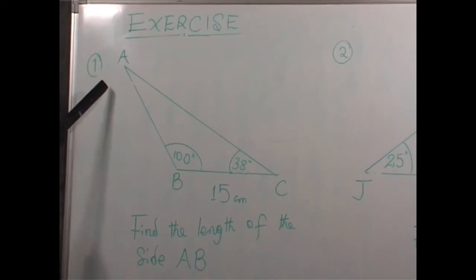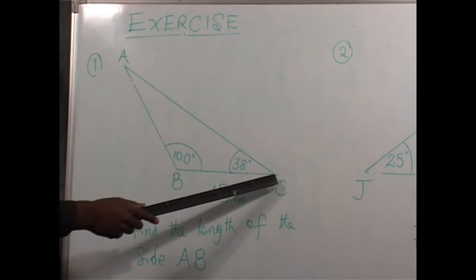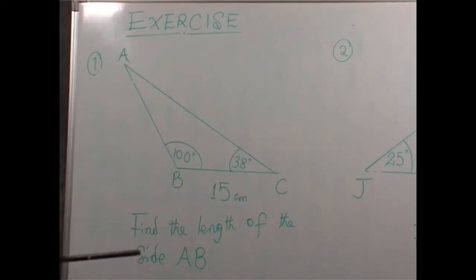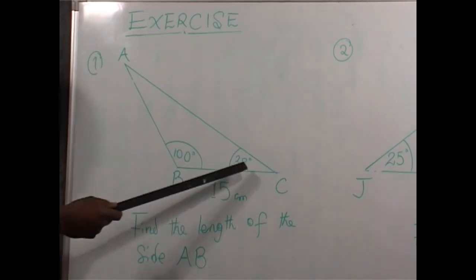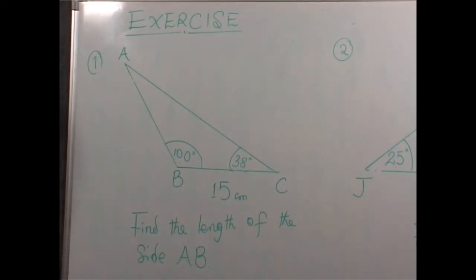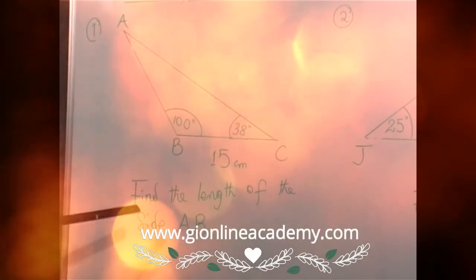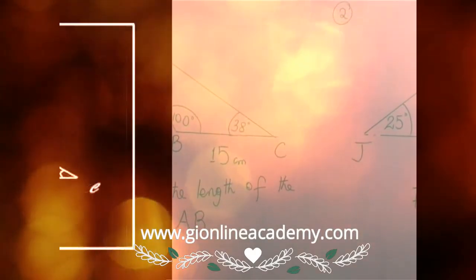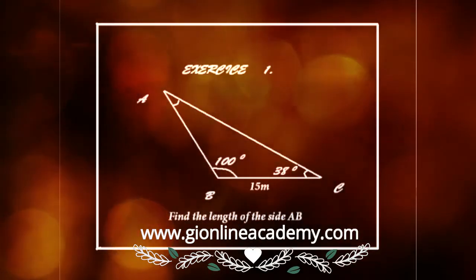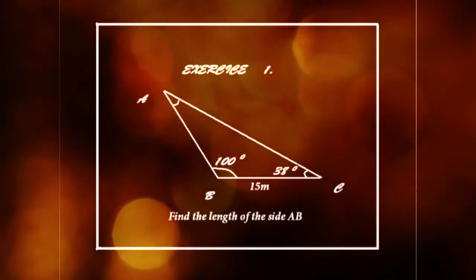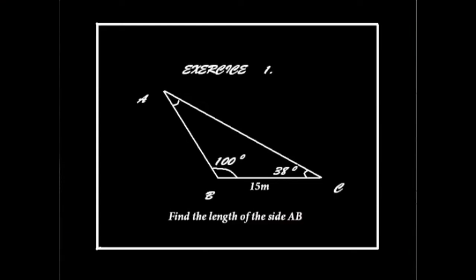Now, we have the two questions that I promised you. The first one involves triangle ABC, in which the angle at B is 100 degrees, the angle at C is 38 degrees. The length of the side BC is 15 centimeters. I require you to find the length of the side AB. Remember, in a triangle, the three angles add up to 180 degrees.